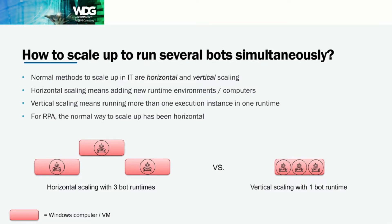At some phase you need to start thinking about situations where you need to run your bots simultaneously, and how you want to scale up your bot runtime environments. The normal methods from the IT industry are horizontal and vertical scaling. Horizontal scaling means adding new runtime environments — new computers, new servers — in order to facilitate more runtime executions. Vertical scaling means running more execution instances within one runtime environment.